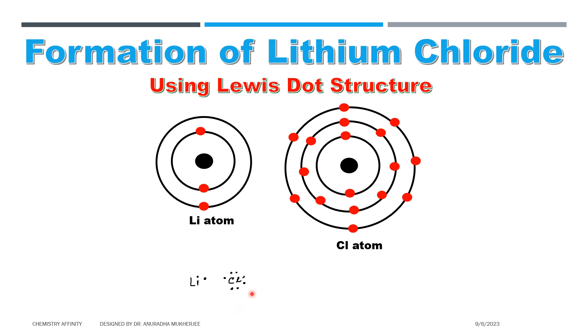Similarly, this is the Lewis dot structure of chlorine: the symbol of chlorine and seven dots, which represent the seven valence electrons.